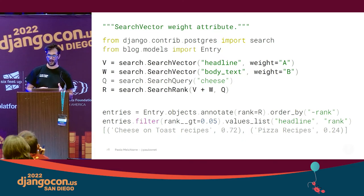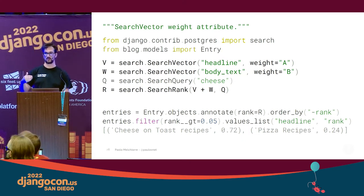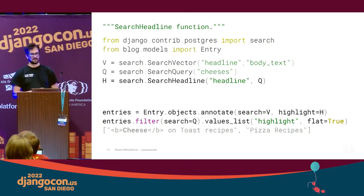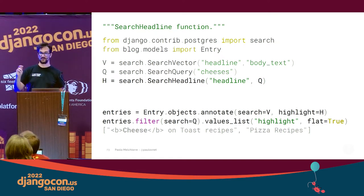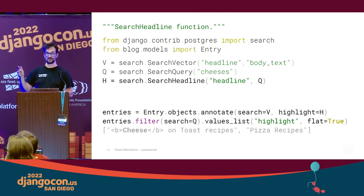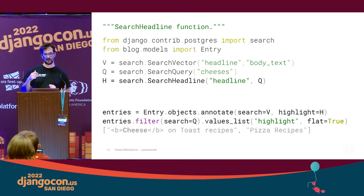This is a very efficient way to incrementally improve our search functionality based on the search results we see. We can also highlight the search results using the SearchHeadline function. We specify the field we want to highlight and can filter and highlight at the same time. Postgres will highlight all search query matching words and also variants on them, for example plural or singular forms.